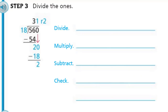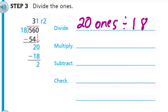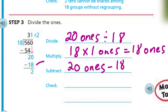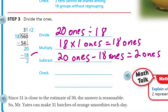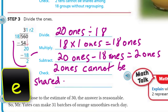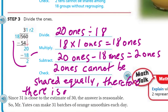Now it says divide the ones. We have the 3, we have the 2, we brought down our 0, so there's 20. Now we have 20 ones — we divide that by the 18. We always divide, multiply, subtract — that's the order. So we take our 18 times the 1 one, which gives us 18 ones. Now we subtract: 20 ones minus 18 ones equals 2 ones. Check — we can see that we cannot share 2 equally among 18 groups. Therefore, there is a remainder of 2.